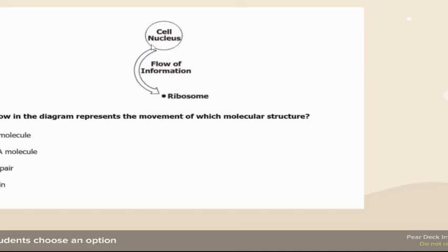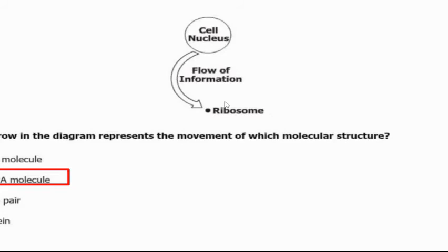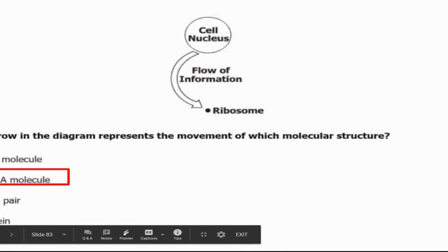The flow of information from the cell nucleus to the ribosome follows the central dogma: DNA to RNA to protein. DNA is in the nucleus and we want proteins at the end. It's the mRNA molecule — messenger RNA — that transfers that information. So it's not A or D.